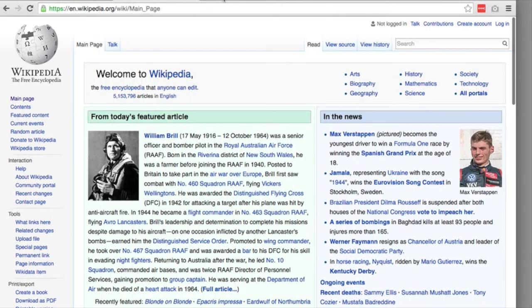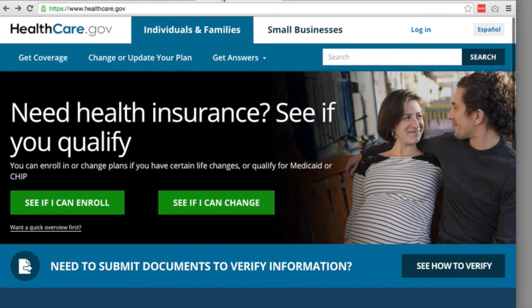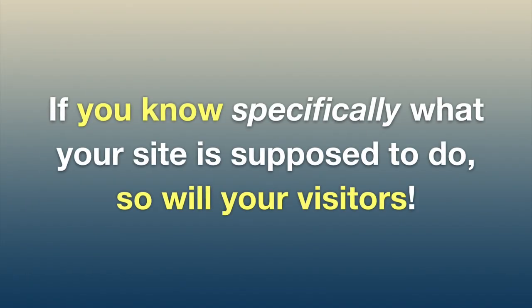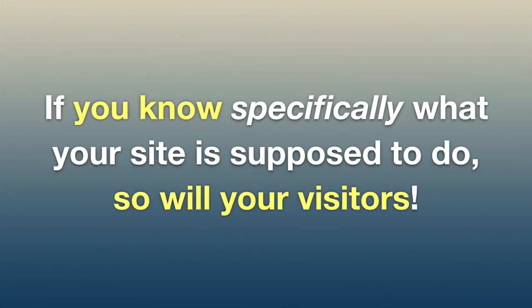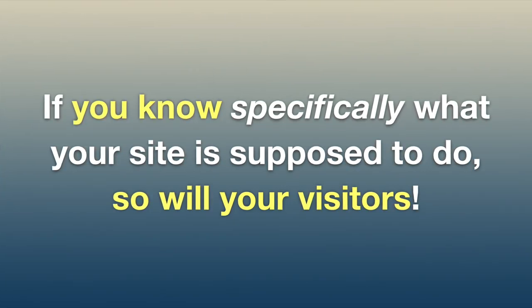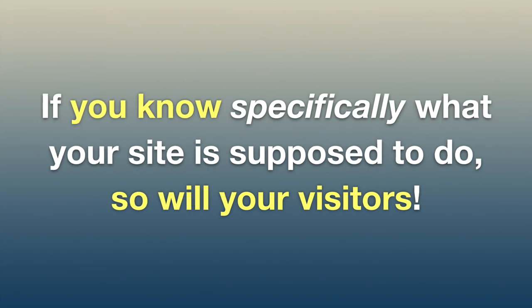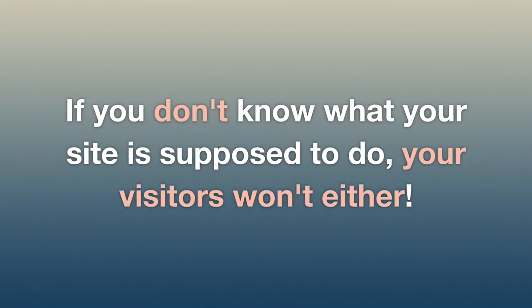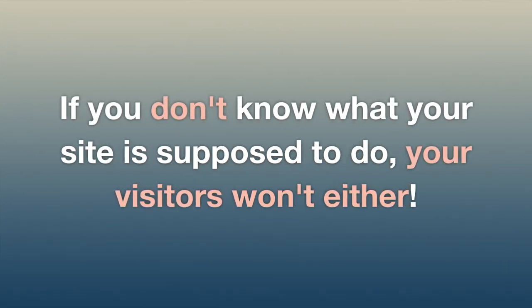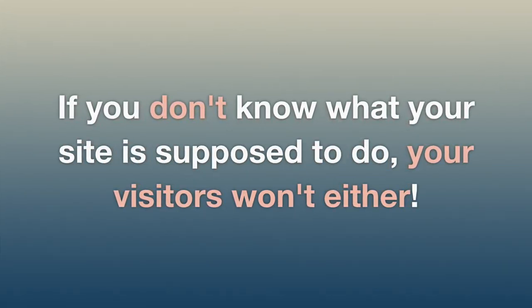So we've looked at three very different examples: a site built to get new customers, a site built to disseminate information, and a site built to answer questions in order to help people interact with a complex service. The main takeaway is straightforward: if you know specifically what you want your site to accomplish, your visitors will too, and it will be much more likely to succeed towards that goal. If you don't know specifically what your site is supposed to accomplish, your visitors won't know either.